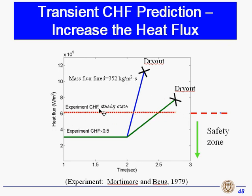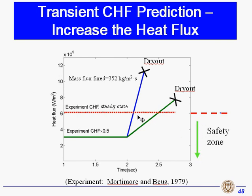So, if we use the steady-state critical heat flux as the safety limit, there will be no dry-out under transient conditions below that limit. This means that using the critical heat flux at steady state is conservative in transient conditions.